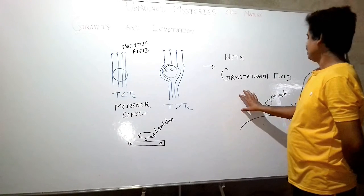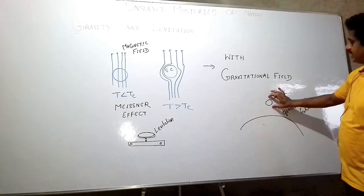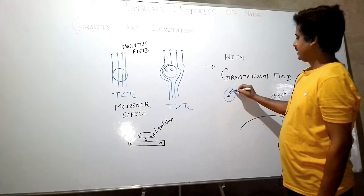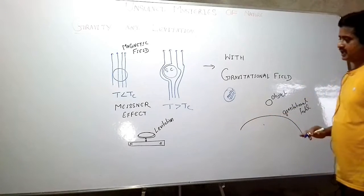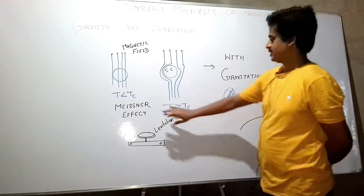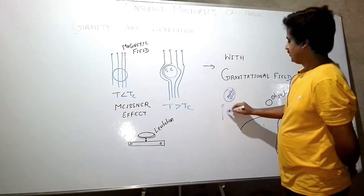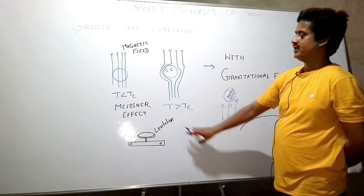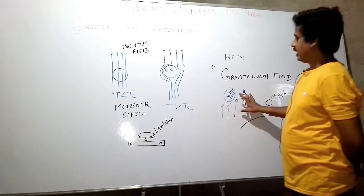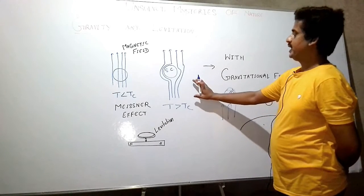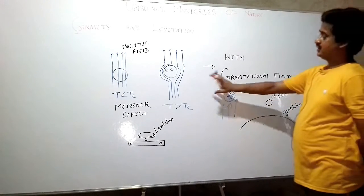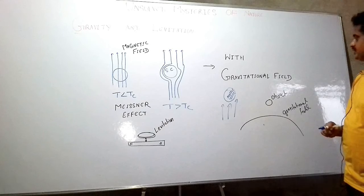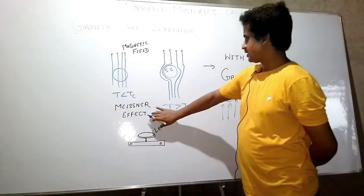What would be the mechanism to generate a Meissner-like effect in any material? What do we have to do so that a material will also float in the presence of a gravitational field, or acquire the ability to expel gravitational field lines? This is one of the unsolved problems in physics — how to generate a Meissner-like effect in matter.